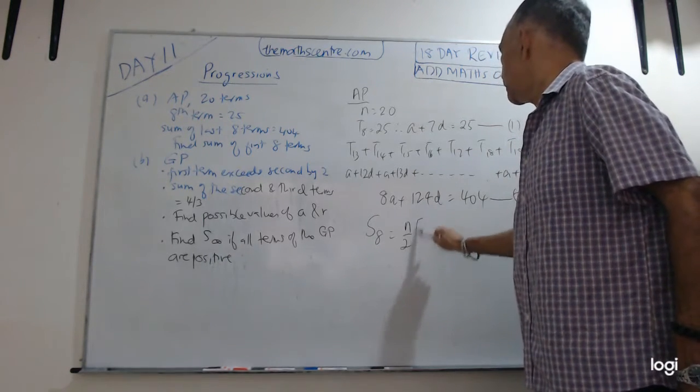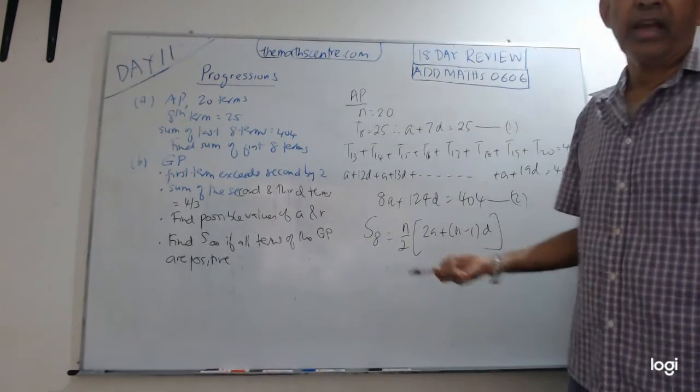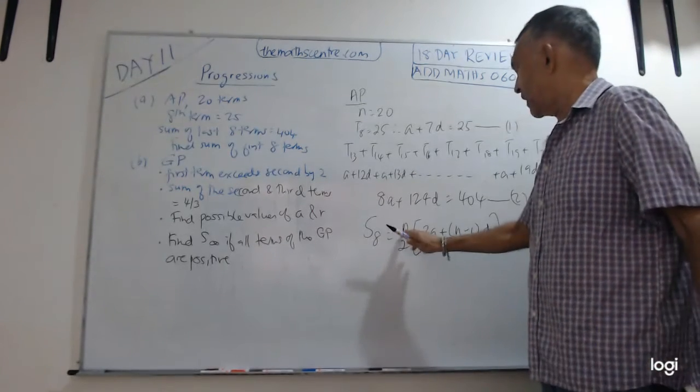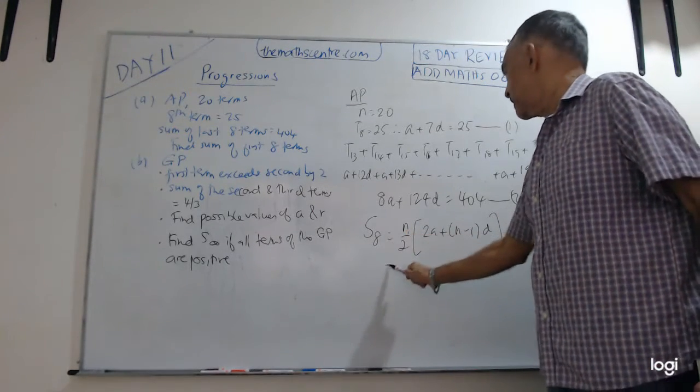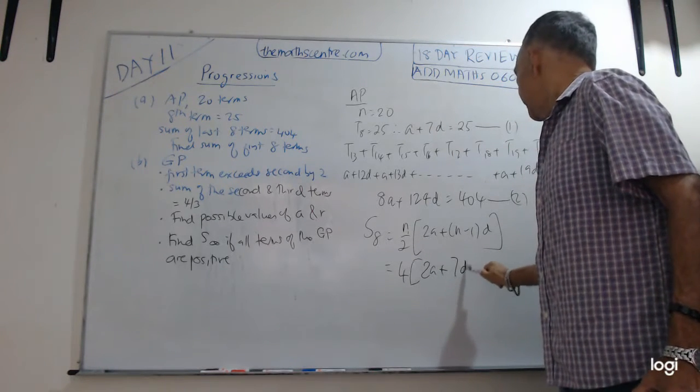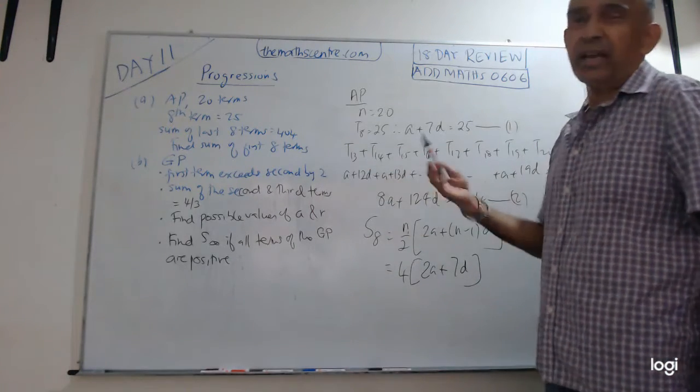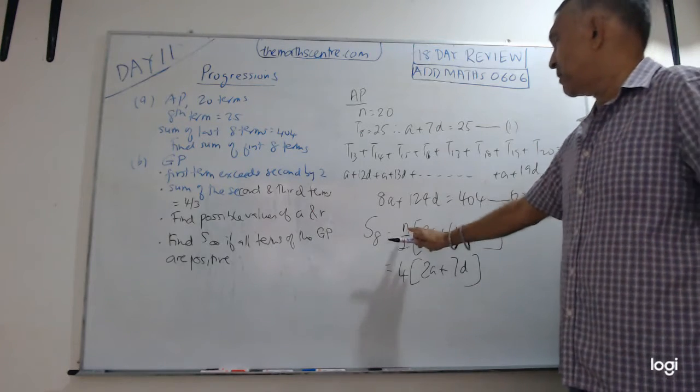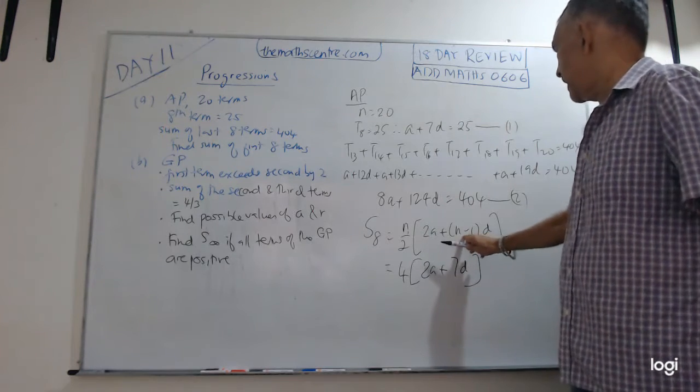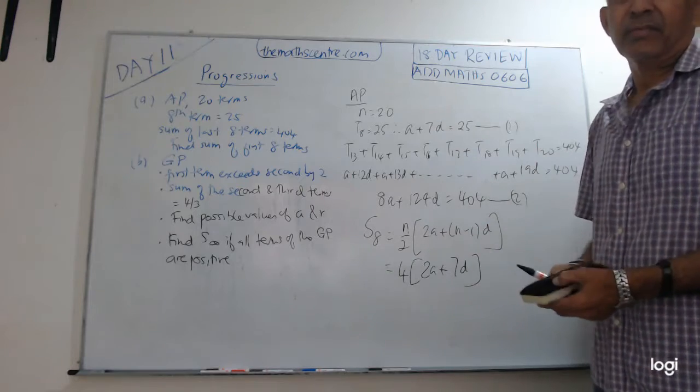We can use the formula n over 2, 2a plus n minus 1 d. You know n is 8. So let me write this here. This will be 4 times 2a plus 7d. I'll repeat. They ask you to find S8. We're using n over 2, 2a plus n minus 1 d. Just remember here n is 8, 8 divided by 2 is 4, and 8 minus 1 is 7. The a and d you would have gotten from here. Plug it in. Easy.